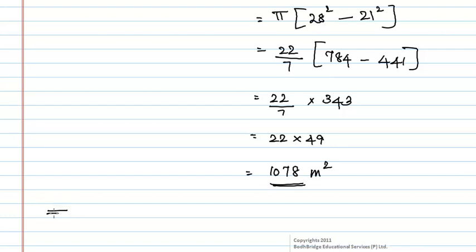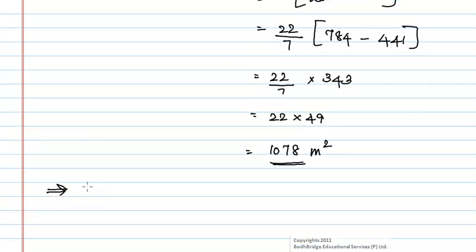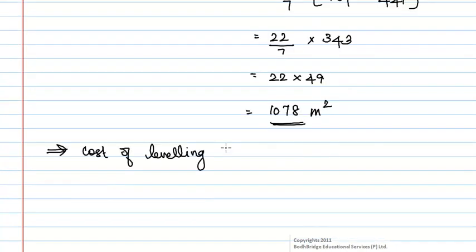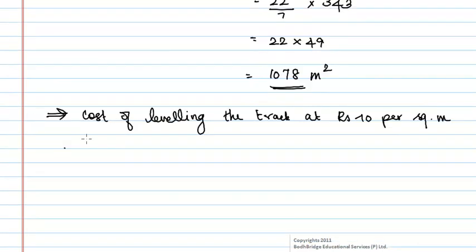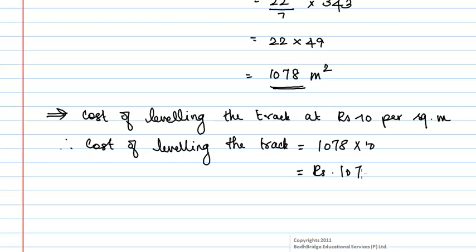Then it is given in the question that cost of leveling the track at 10 rupees per square meter. Therefore, cost of leveling the whole track is equal to 1078 into 10, which is equal to rupees 10,780.